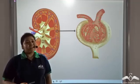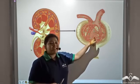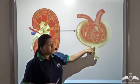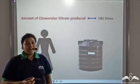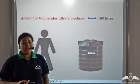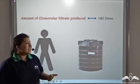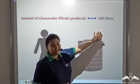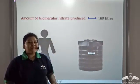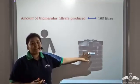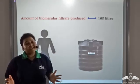Ultrafiltration takes place in the glomerulus and the glomerular filtrate is released into the Bowman's capsule. The amount of glomerular filtrate produced in 24 hours, in one day, is about 160 liters. The tank that you have on your terrace is about the capacity of 160 liters. That much amount of glomerular filtrate is produced in the kidney.